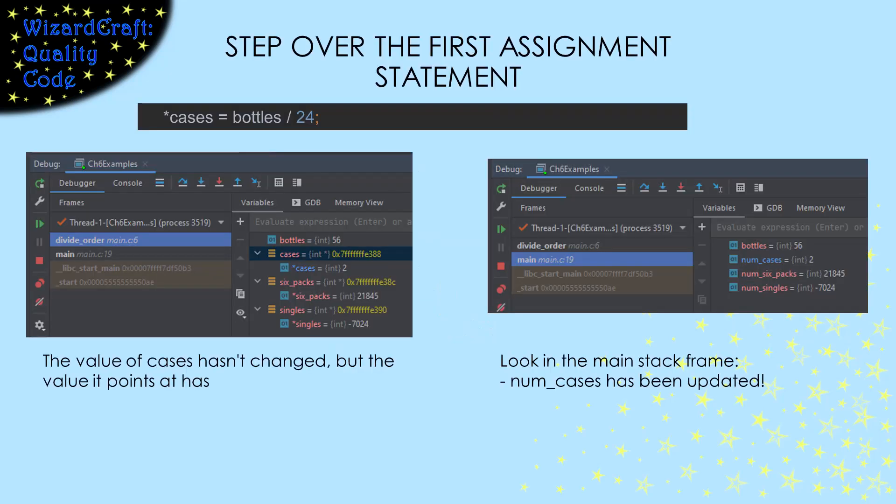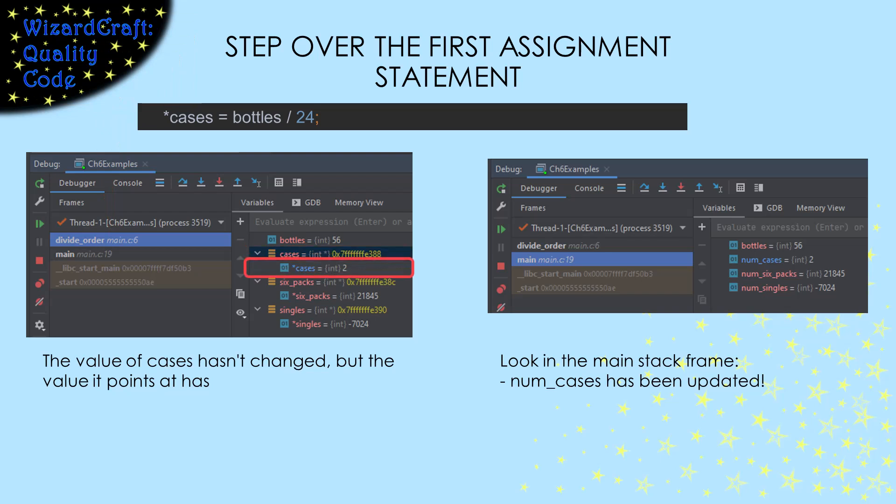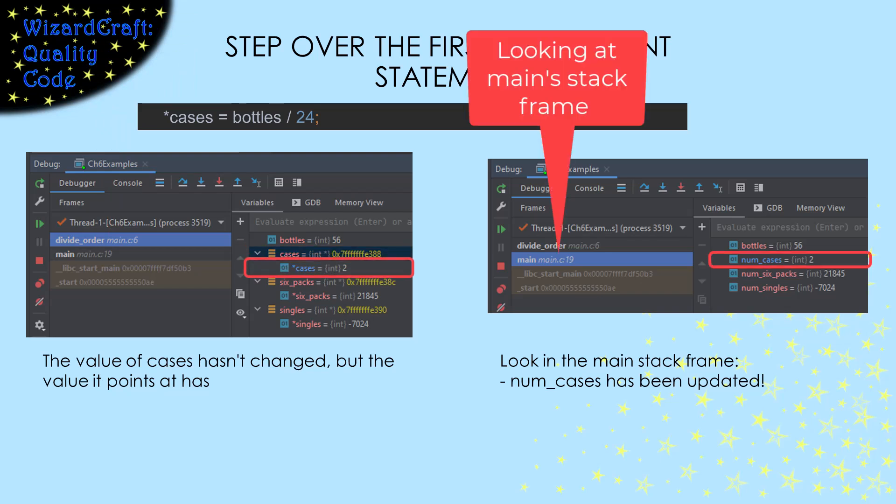Let's see how that would look in CLion. Here, I've stepped over that first line of code. Notice that when I'm looking at the divide_order stack frame, the value of cases hasn't changed. It's the same pointer it was before. However, when I look at main's stack frame, num_cases has changed to 2, and CLion even highlighted that change in blue.